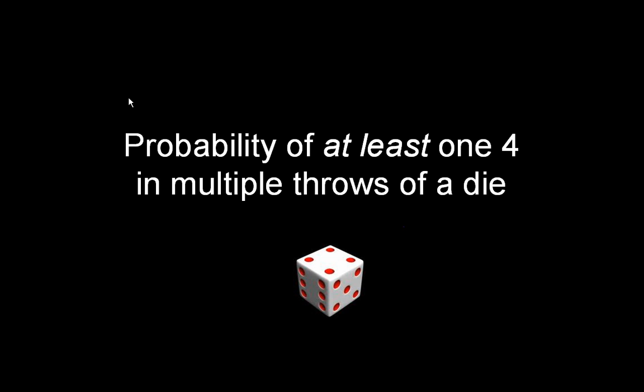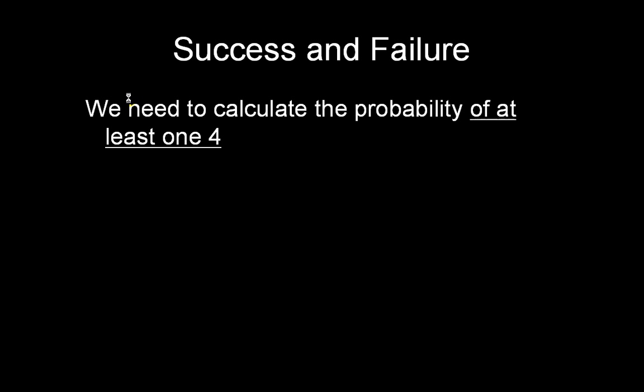In general, throws of a die form binomial distributions, but that doesn't help us. We need to start thinking about this in terms of success and failure. So what do we need to calculate? Let's not forget that we need to calculate the probability of getting at least one four.